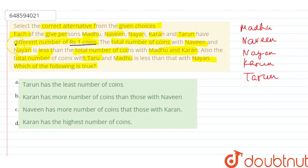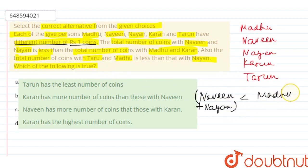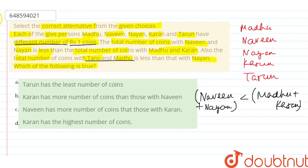That is different numbers of 1-rupee coins. The total number of coins with Naveen and Nayan is less than the total number of coins with Madhu and Karan — Madhu plus Karan. अब एक statement और है: also the total number of coins with Tarun and Madhu is less than that with Nayan — इसको भी plot कर लेते हैं।